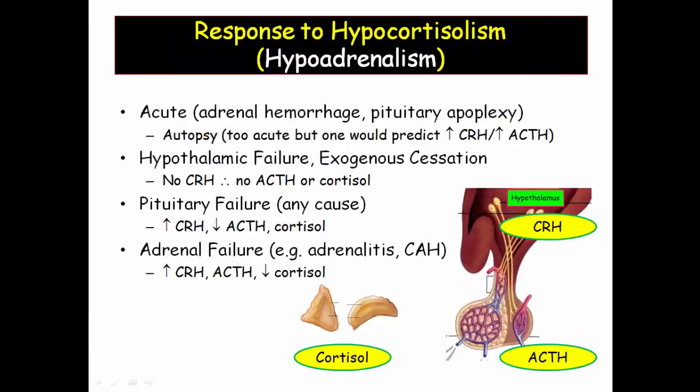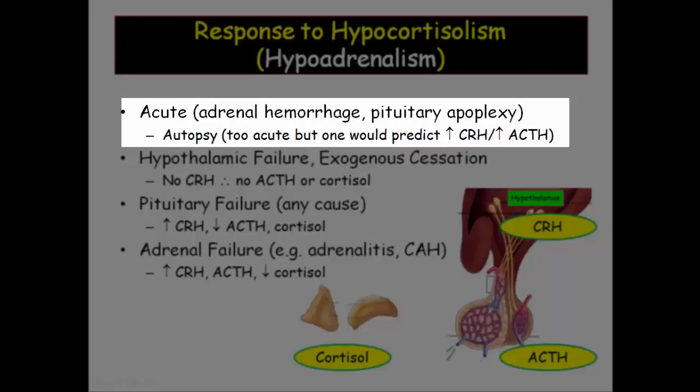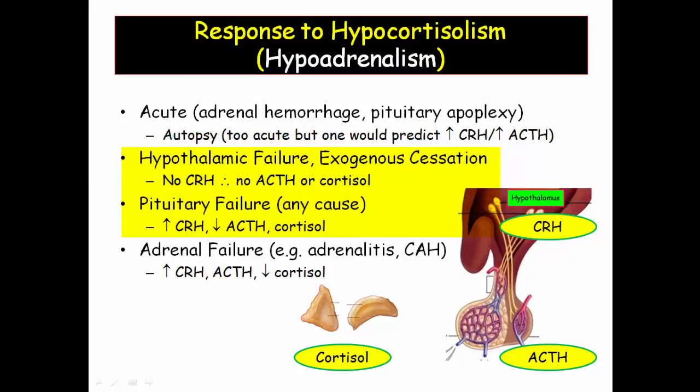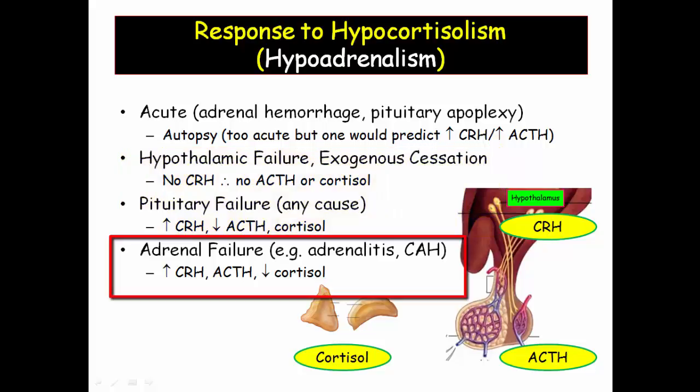The response to hypocortisolism should now be intuitive. With acute hemorrhage of either the adrenal or pituitary, questions about physiologic response are not asked, as these patients are critically ill. With hypothalamic failure from infiltrative disease or suppression from exogenous steroids, CRH and ACTH will be diminished. In pituitary failure, CRH is elevated with low ACTH and cortisol. In primary adrenal failure, both the hypothalamus and pituitary respond appropriately with elevated CRH and ACTH respectively.